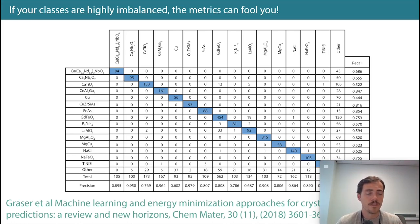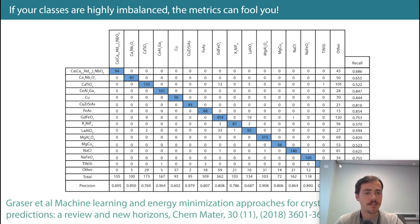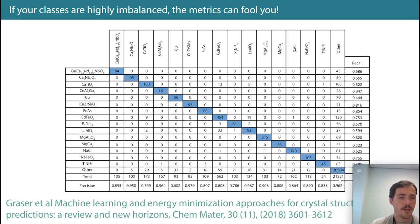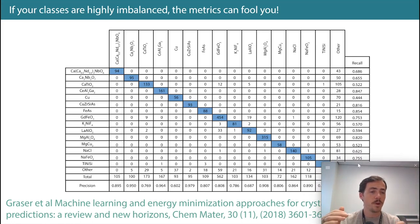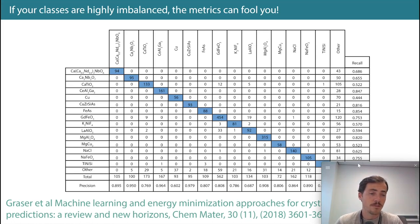We tried to classify the common ones and put everything else in an 'other' category. There were 21,821 materials in the other category — way more than any of the specific structure classes. If your model used only overall accuracy, it would quickly learn to always predict 'other' and never try to predict the other classes, getting like 99% accuracy just by doing that. That's a broken classifier.